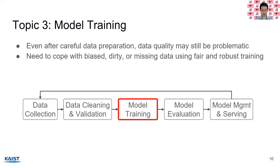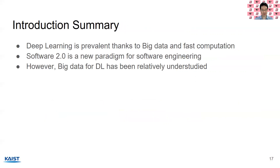Topic three is model training. Even after carefully preparing, validating, and cleaning our data, data quality may still be problematic — there's no guarantee all data problems are fixed. So we still need to cope with biased, dirty, or missing data during model training. Fortunately, there are various fair and robust training techniques available, and we will cover them extensively. In summary, deep learning is prevalent thanks to big data and fast computation, Software 2.0 is a new paradigm, but big data for deep learning has been relatively understudied.